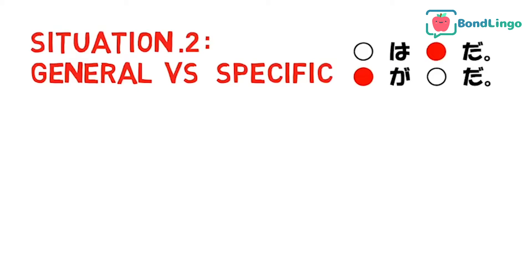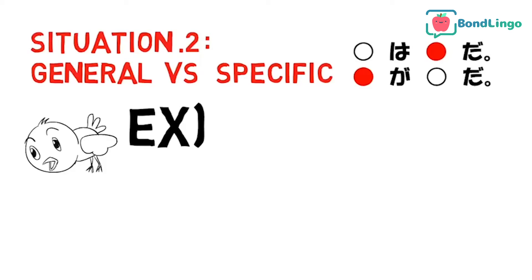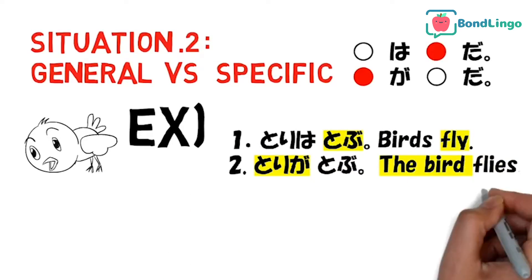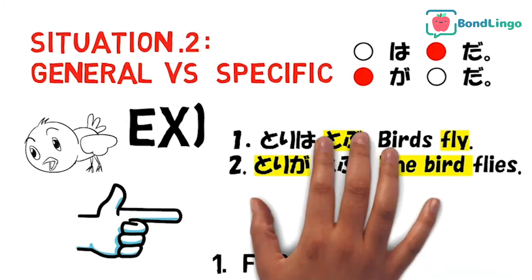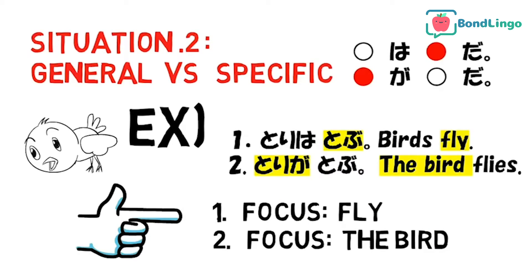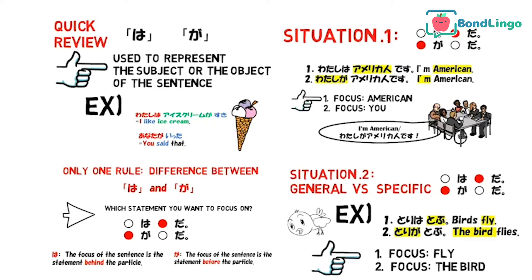From your textbook, you might have learned that you use ha to indicate general information and ga to indicate specific information. That's correct. But the only thing you need to care about is still the rule I said before. For example: 鳥は飛ぶ means 'Birds fly' — a general fact, where the focus point is the verb and the subject is treated as something you already know, so we use ha. But 鳥が飛ぶ means 'The bird flies' — a specific scene where you see a particular bird flying and want to tell your friends about it, so the focus point is the subject, the bird, and we use ga.